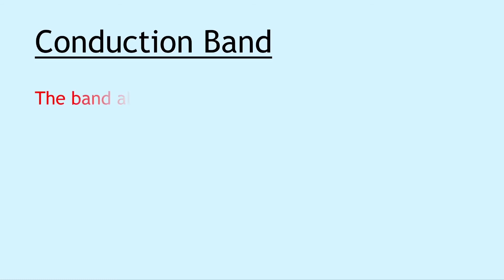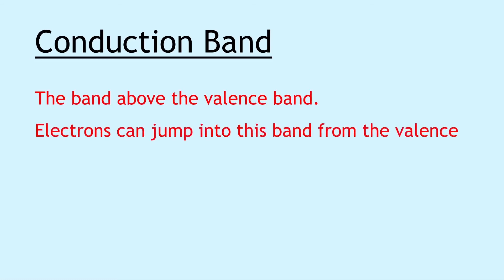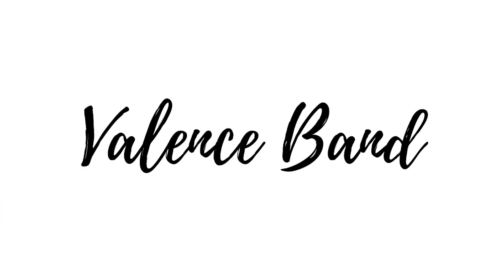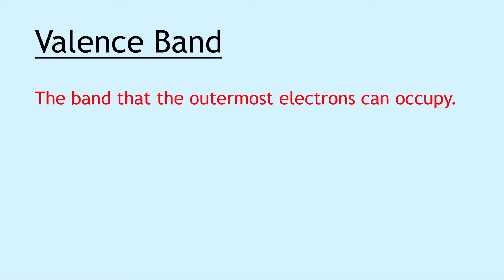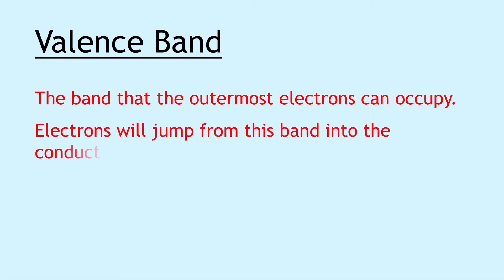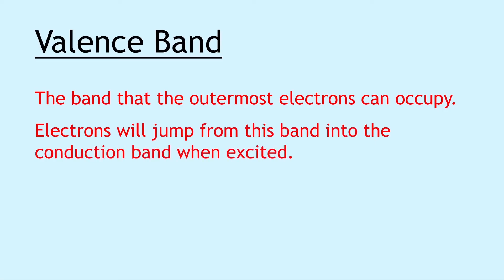Moving into band theory terms, we have the conduction band, and this is the band above the valence band. Electrons can jump into this band from the valence band when they have enough energy. Our next one is valence band, and this is the band that the outermost electrons can occupy. Electrons will jump from this band into the conduction band when excited.